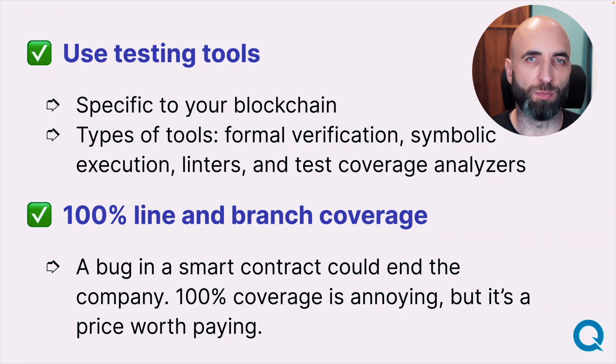Next, go for 100% test coverage. It's annoying and the last 10 or 20% is hard to achieve, but you need to do it. A bug in a smart contract can end your project and your company, so it's a small price to pay.